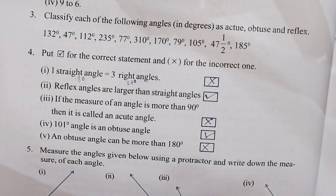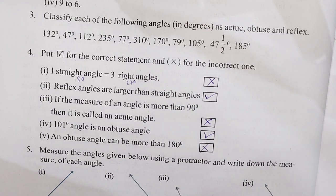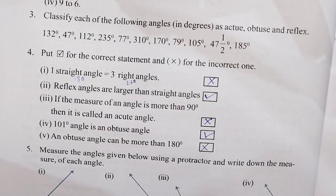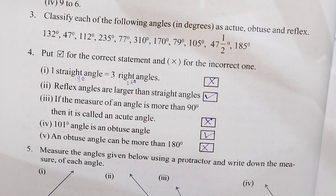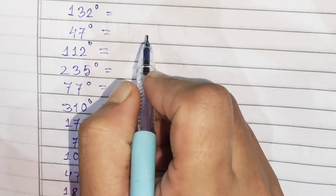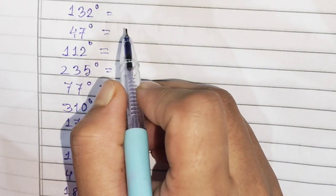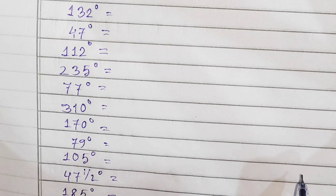Next, question number 3: Classify each of the following angles. First angle: 132 degrees. Since 132 degrees is between 90 and 180, it is an obtuse angle. Next angle: less than 90 degrees — that would be acute. And a reflex angle is between 180 and 360 degrees.